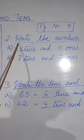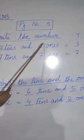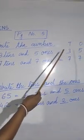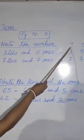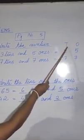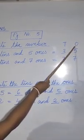There you have to write the number. So for your understanding, on the blank side on top, you can write T and O. T means tens place and O means ones place.